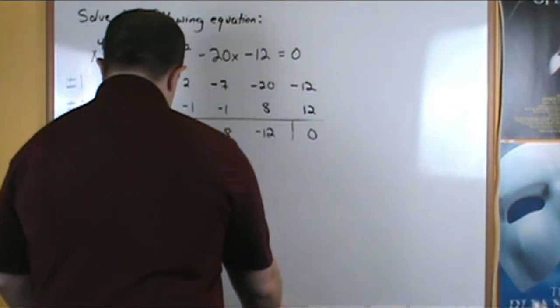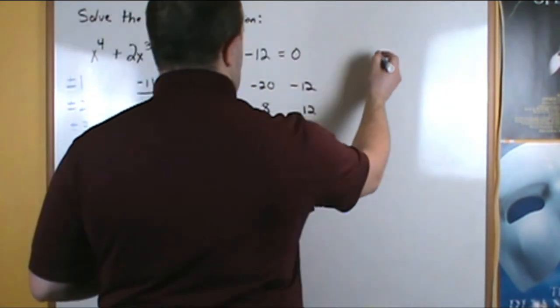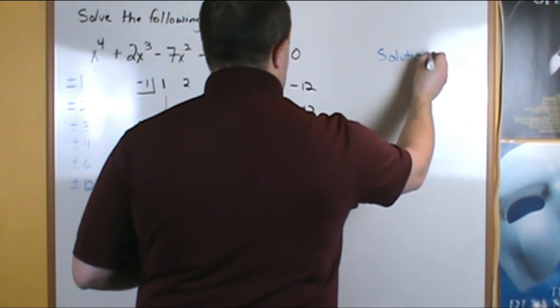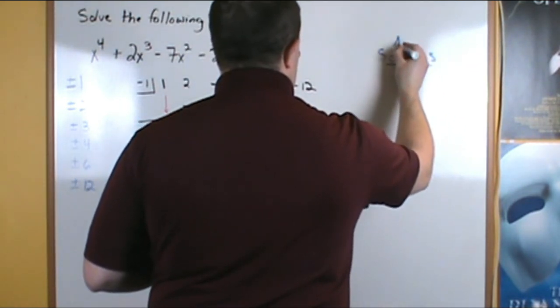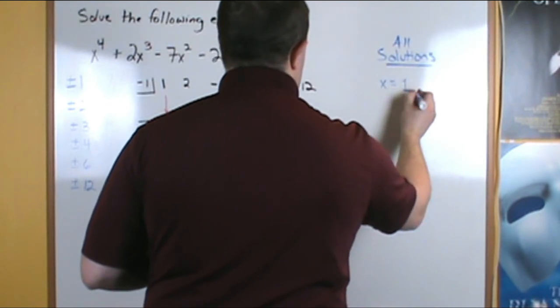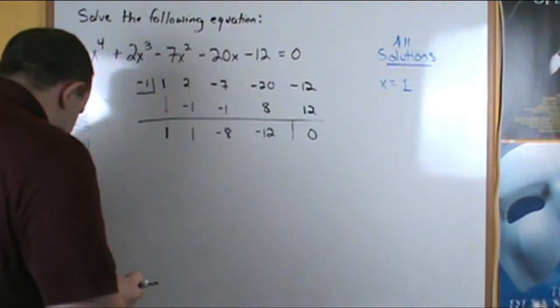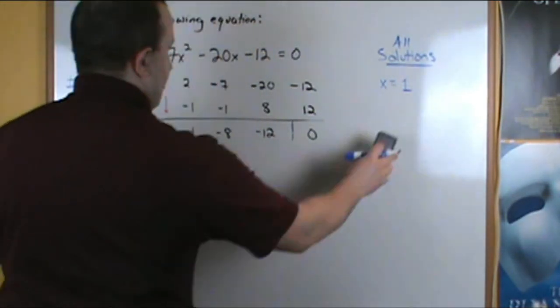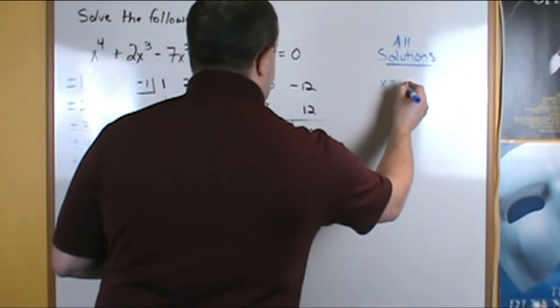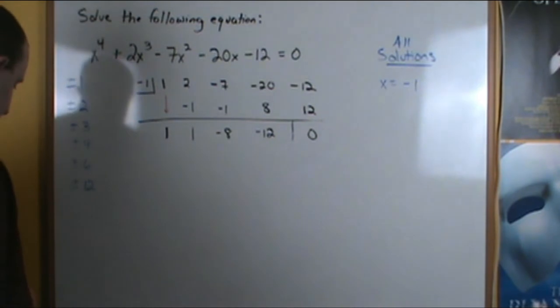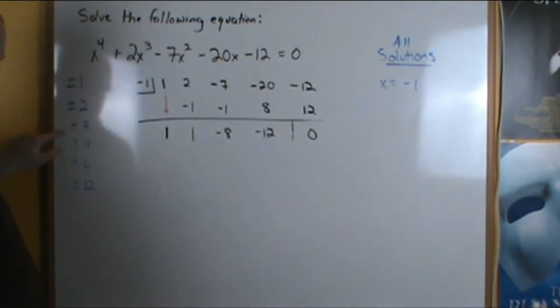So our solutions here, all of our solutions are x equals negative 1, right? Because we found that 1 doesn't work, so x equals negative 1 works. And now what we can do is we can keep testing each of these values.